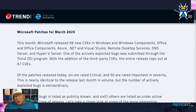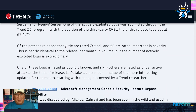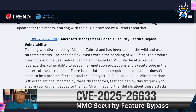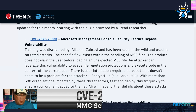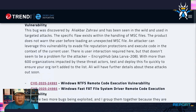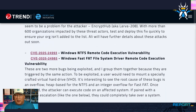56 new CVEs for Microsoft, so not a huge release, but we have six bugs being actively exploited in the wild. We'll start with one that came from Trend Micro Security Research: the MMC Security Feature Bypass Vulnerability. We're seeing this used by EncryptHub, aka Larva208. It's part of their kit that they're using in ransomware. About 600 organizations have been affected by this, so you want to get on that.